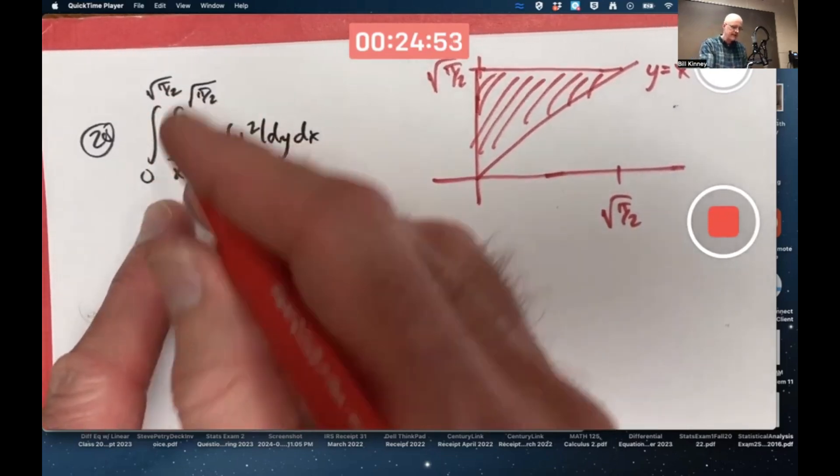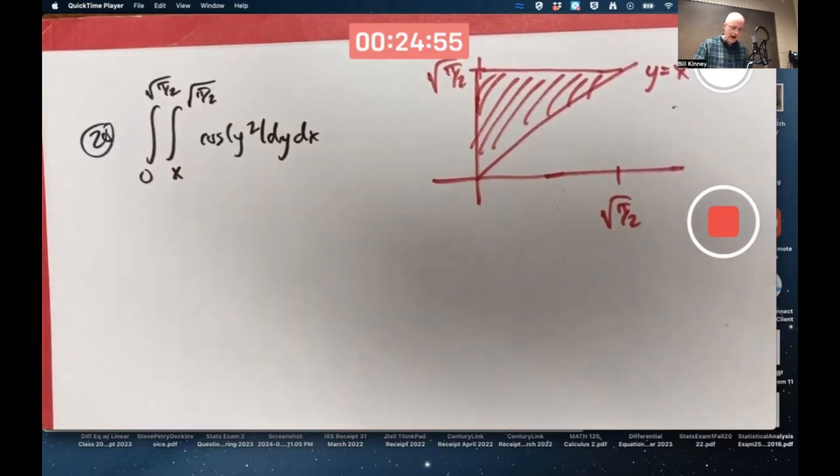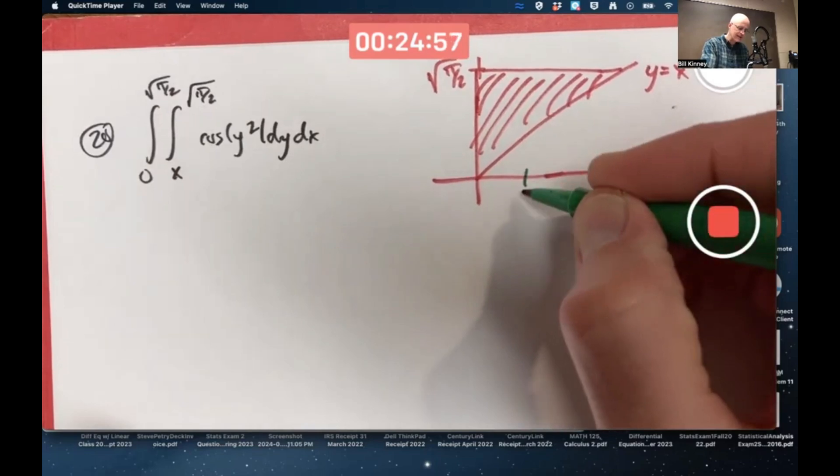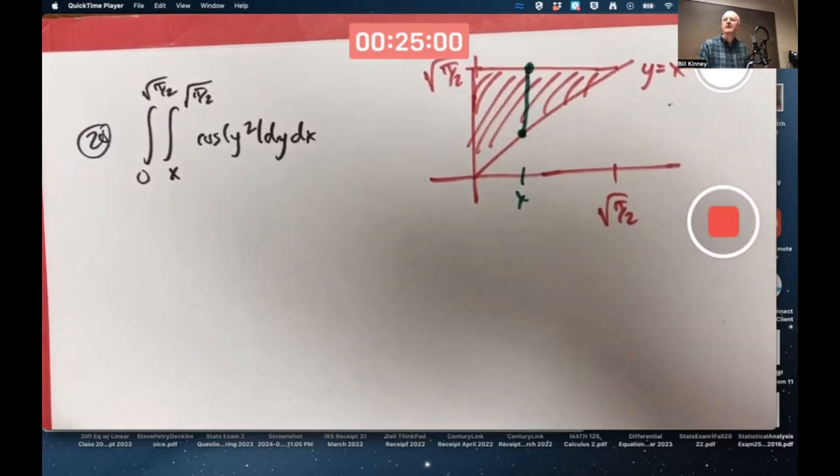That means the region of integration has got to be this triangle here. For any fixed x between zero and square root of pi over two, y goes between two functions of x. It goes from here to there. To switch it around, to do it dx dy, you have to think about it the opposite way.